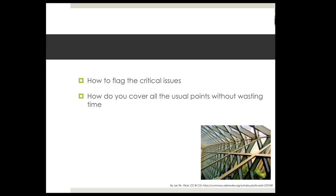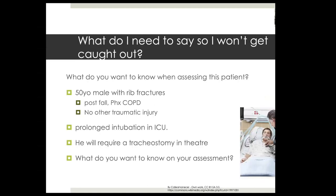What I really want to go through is how to flag the critical issues and how to cover all the usual points without wasting time. We're going to go through all of that in the next few exercises. I want you to have a go at this: what do you want to know when assessing this patient? Imagine a 50-year-old patient with rib fractures post a fall, past history of COPD - just rib fractures, no other traumatic injury. Prolonged intubation in ICU will require a tracheostomy in theater, and the examiner asks what do you want to know in your assessment.